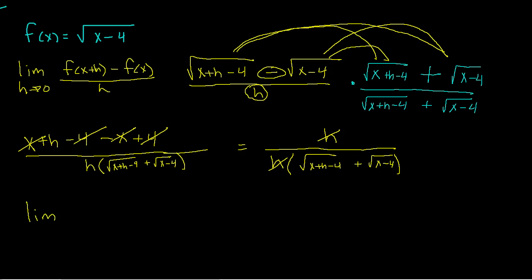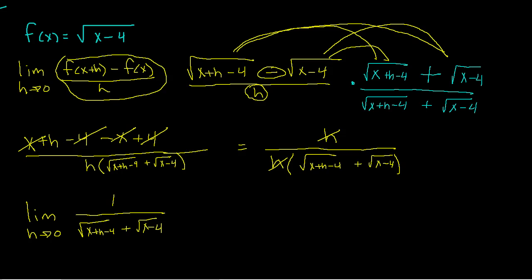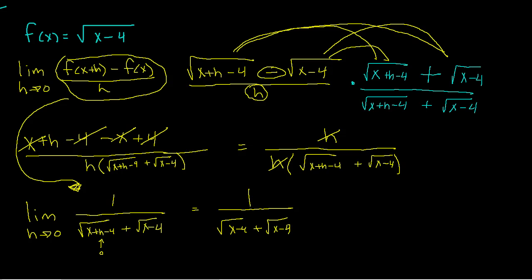Now that it's cleaned up, I can go ahead and apply my limit. I have 1 all divided by the square root of x plus h minus 4 plus the square root of x minus 4. Through a bunch of good algebra, it reduced to that. Now I'm ready to plug in 0 for h. Plugging in zero, I get the square root of x minus 4 plus the square root of x minus 4 in the denominator. So I get 1 over 2 times the square root of x minus 4.